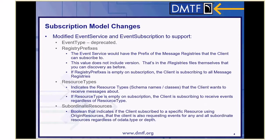The subscription model changed: event type has been deprecated. That means it's not going away right away — in a future version, if we ever go to 2.0, we'll get rid of it completely. We found it a very confusing way of doing things because the enums in it were only alert, then status changed, and three others which were kind of mirrors to the CIM lifecycle event. It wasn't a clear match for a registry approach. A lot of vendors went ahead and created their own message registries, and that's fine.